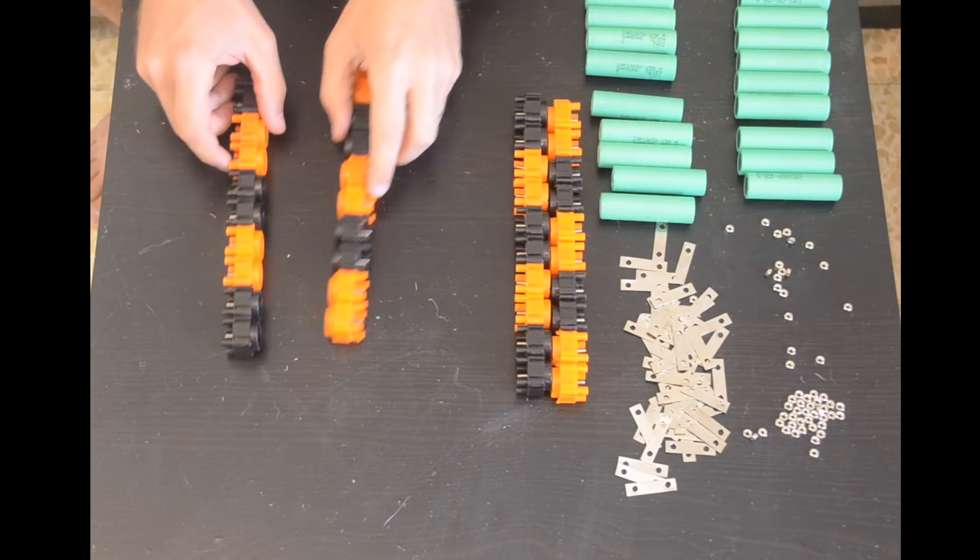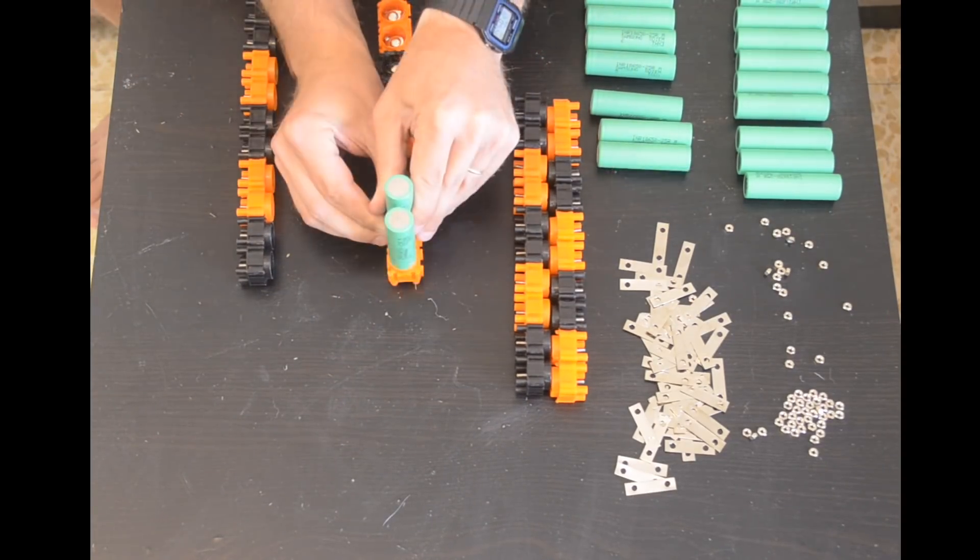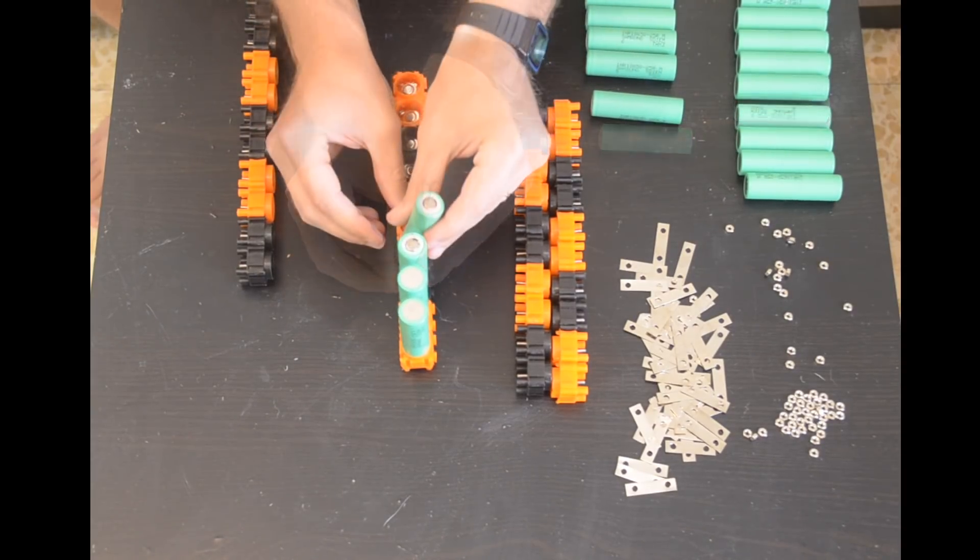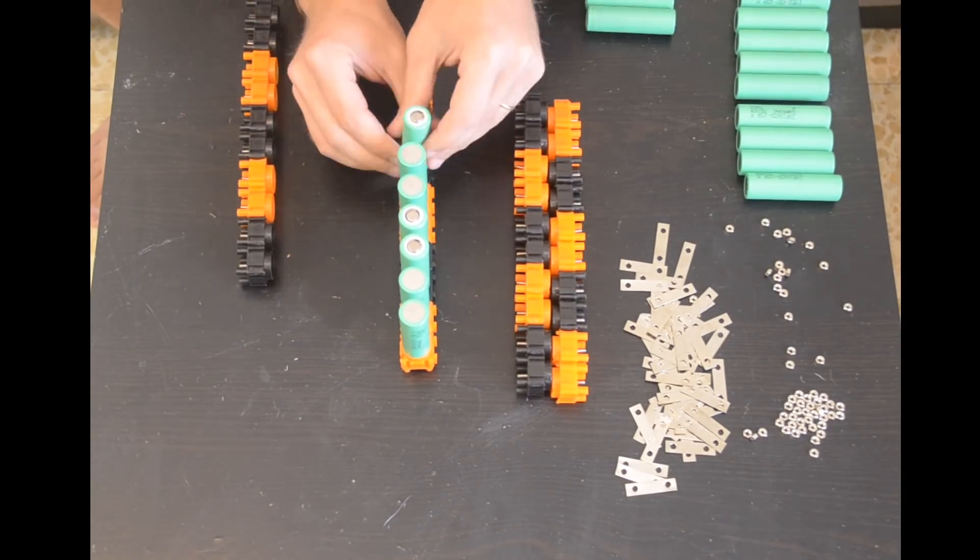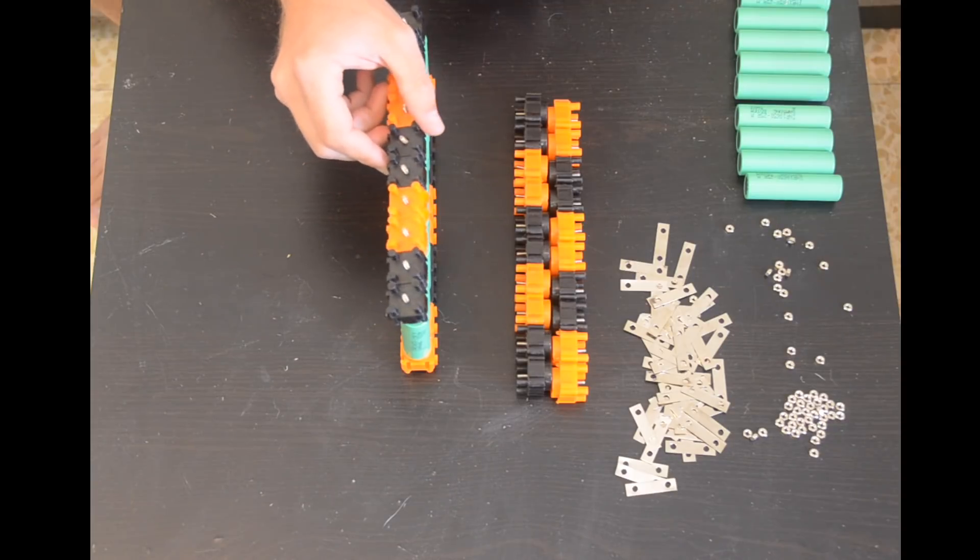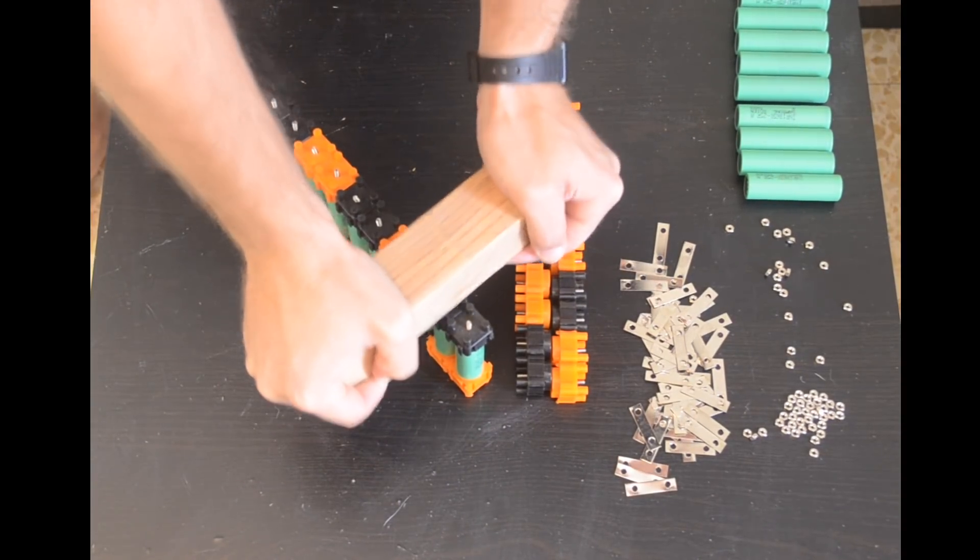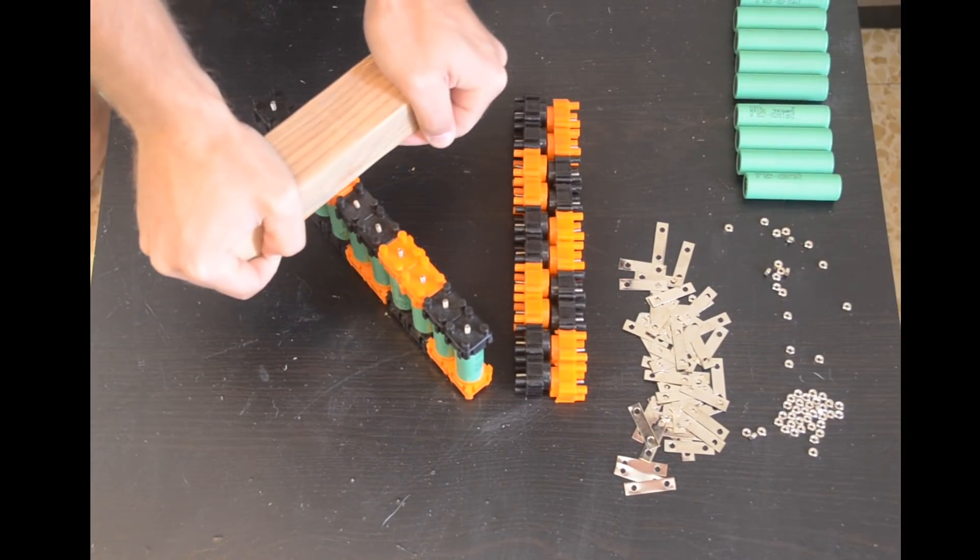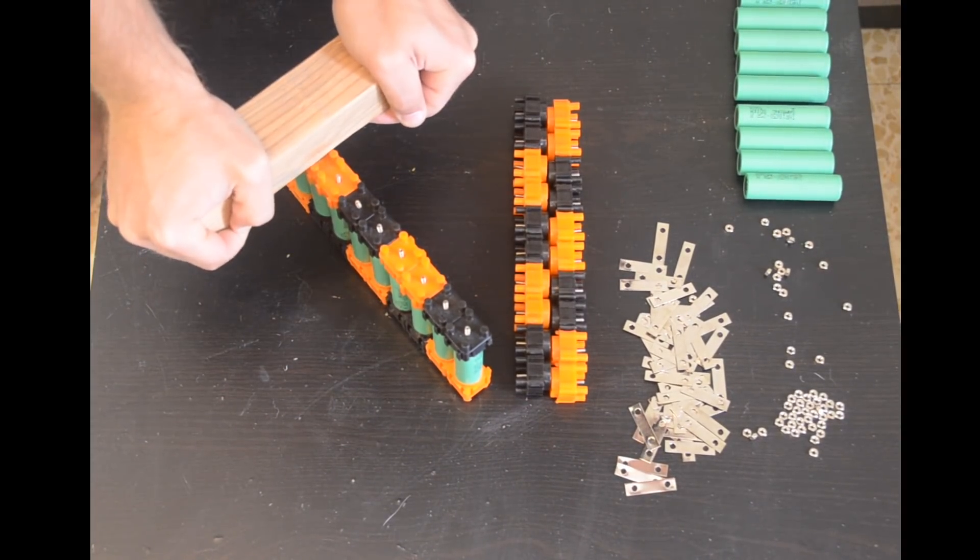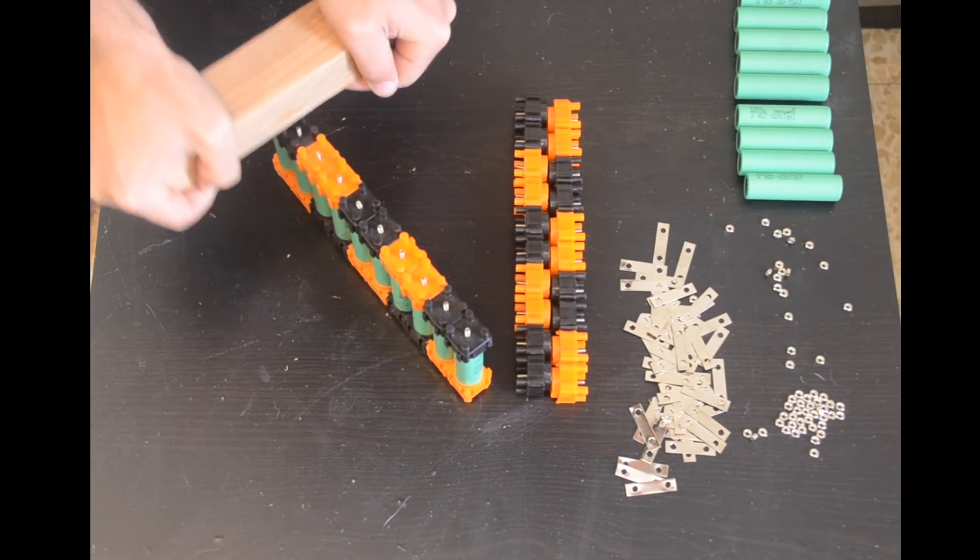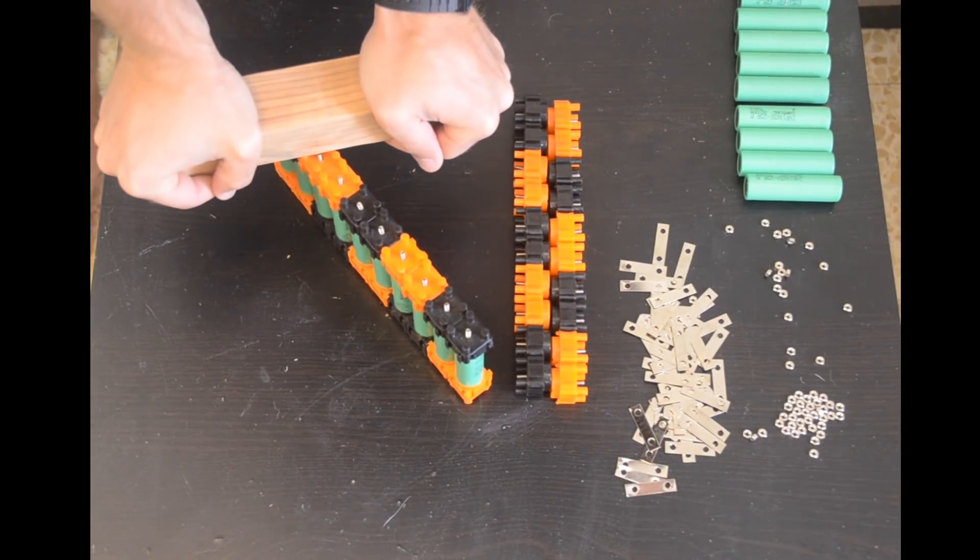Once all of my rows and caps are connected and match my diagram I can then begin inserting the cells into the caps making sure to get the polarity correct. To compress the cells into the caps I'll just use a block of wood or any other hard flat object to distribute my weight over the caps. No clamps are needed with the V1.5 and later kits as we made the caps easier to slide onto the battery cells.